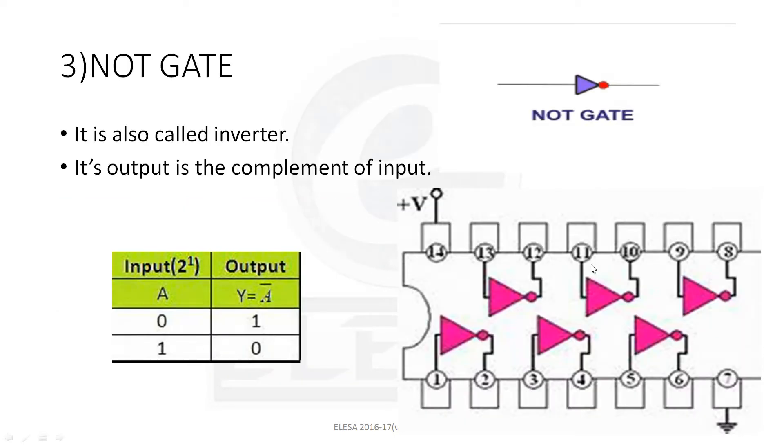The last basic gate is NOT gate. It is also called an inverter because its output is the complement of input. The symbol for NOT gate is like this. Here, if we give input as 0, then we get output as 1. That is, in digital, if we give logic 0, then we obtain logic high.